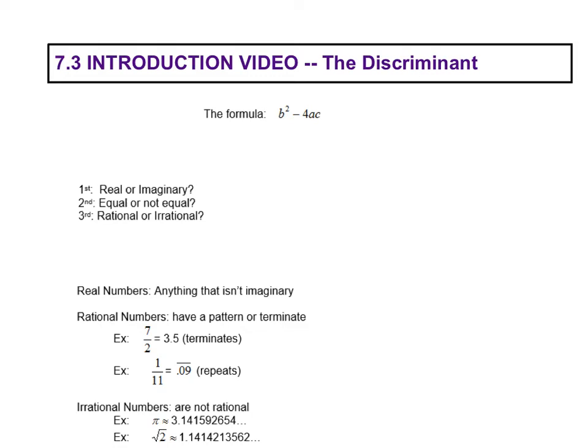In our last lesson for chapter 7, we're going to focus on something called the discriminant. So the discriminant has a nice little formula: b squared minus 4ac.